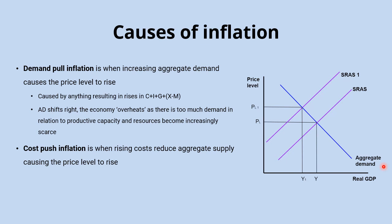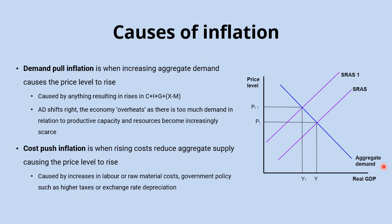The other type of inflation is cost-push inflation, which is when rising costs reduce aggregate supply, causing the price level to rise. This could be caused by an increase in labor costs, rising raw material costs, increasing taxes, or even an exchange rate depreciation which would increase the cost of imported raw materials. All these things mean higher costs of production, causing aggregate supply to shift to the left. In the diagram we move from short-run aggregate supply to short-run aggregate supply 1, and the price level again moves from PL to PL1 — that is cost-push inflation.